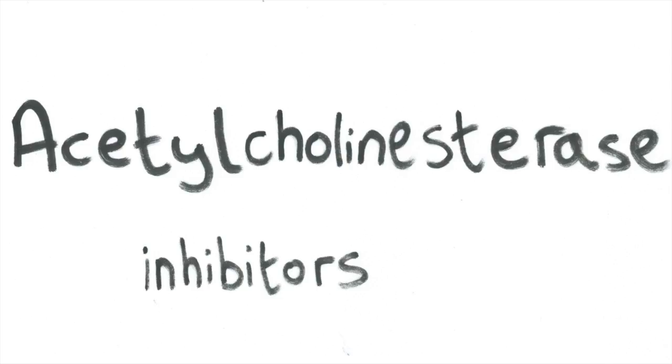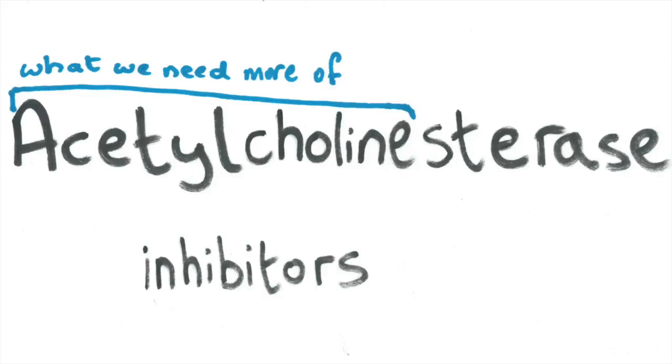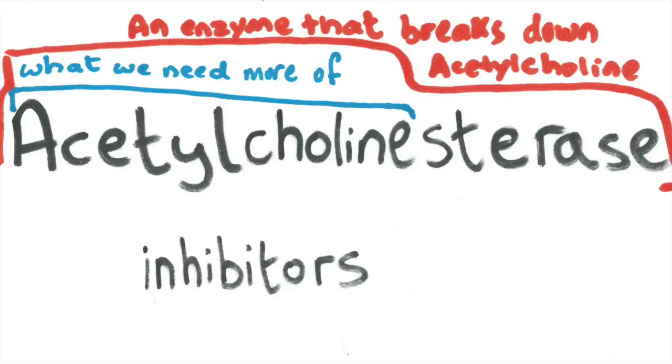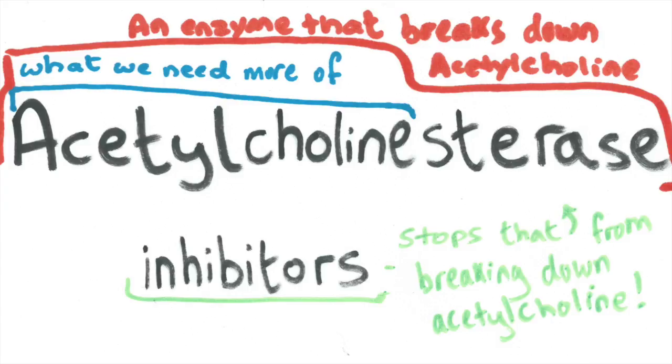There are two main current drug treatments for Alzheimer's. The first focuses on the reduced levels of acetylcholine, using drugs known as acetylcholinesterase inhibitors. Acetylcholinesterase is an enzyme that breaks down acetylcholine — it's adding to our problem by depleting the already low levels of acetylcholine in the brain. An acetylcholinesterase inhibitor therefore inhibits the enzyme, stopping it from breaking down acetylcholine, which leads to an increased level of acetylcholine in the brain. Giving people acetylcholinesterase inhibitors is one way that the symptoms of Alzheimer's can be reduced.